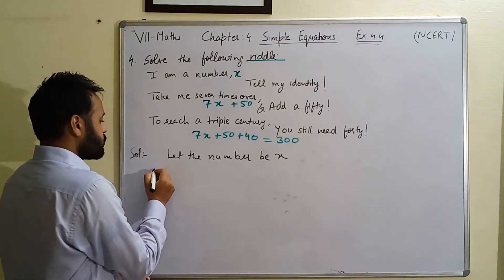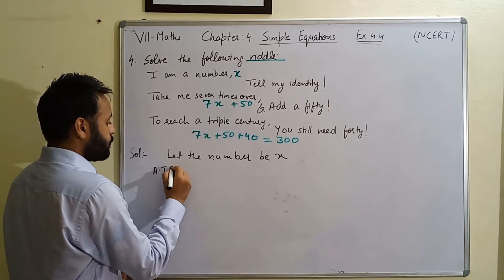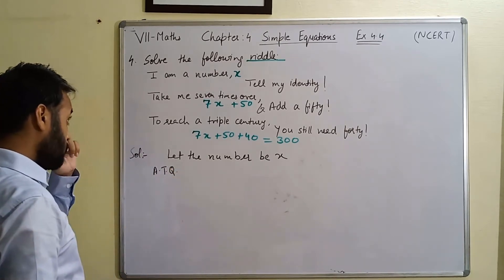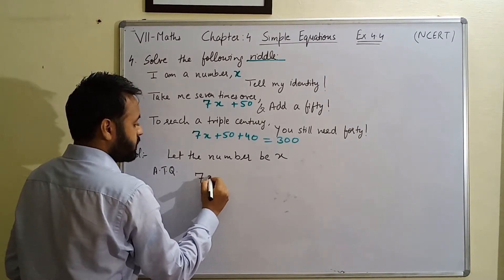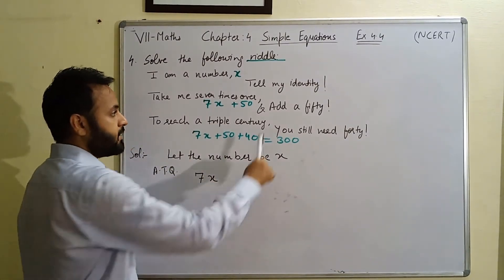Now according to question, we can straight away form the equation. According to question what is given to us. If we take seven times over this number, if we multiply this number to seven and add 50.